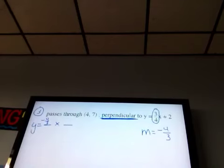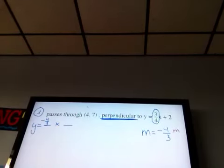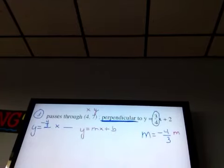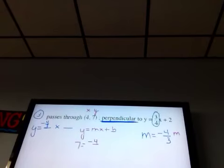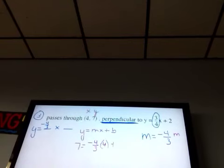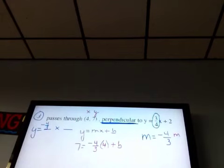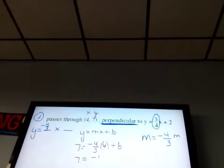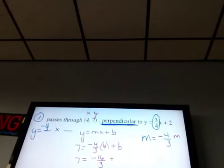And then I'm going to find my b the same way I did on the other two examples. I have an x and a y and I have an m. And I'm going to fill that in to my y equals mx plus b equation. So y is 7, m is negative 4/3, x is 4, plus b.